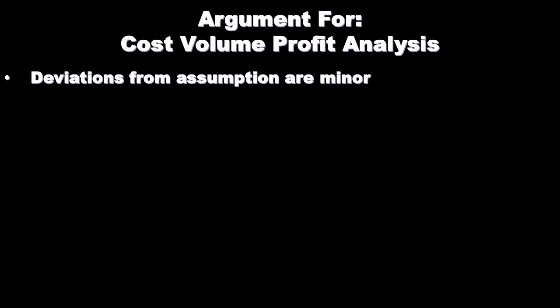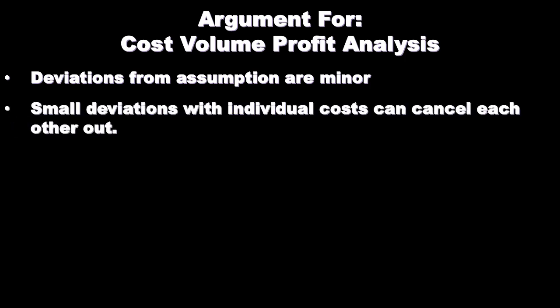One argument for CVP is that deviations from the assumptions may be minor. Yes, there will be deviations when breaking costs into variable and fixed, but we could argue those deviations are small and could go either way — one deviation offsets another. If we net all the minor deviations together, it's quite possible they cancel each other out and result in minor variations overall. Therefore the cost volume profit analysis would still be a good estimate.